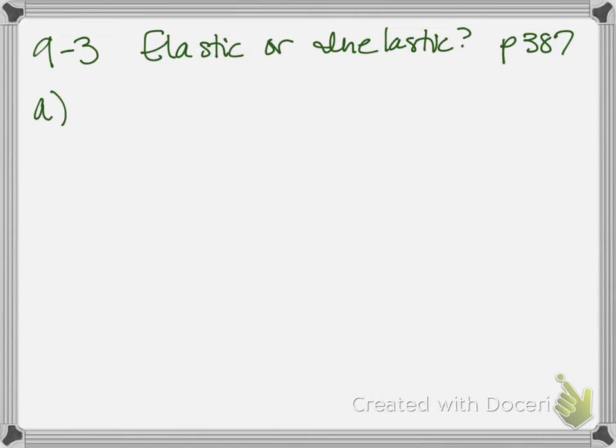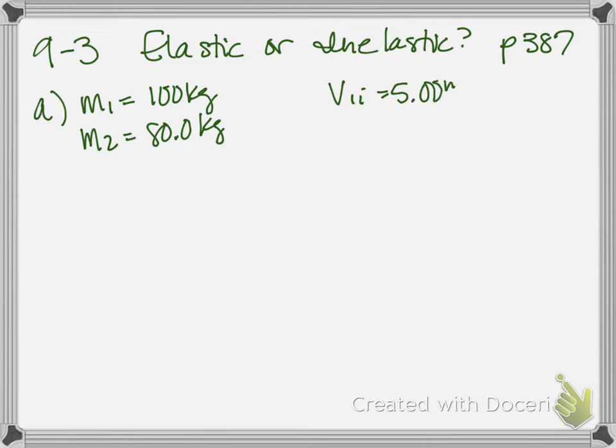So for part A, we're going to return to the hockey players from example 9-2, so you might want to review that one before you do this. The mass of the first player was 100 kilograms, and the mass of the second player was 80 kilograms. The initial velocity of the first player was 5 meters per second, and the initial velocity of the second player was 0.